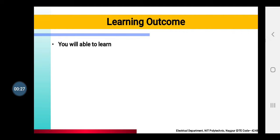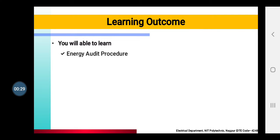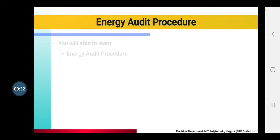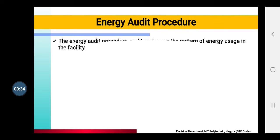Learning Outcomes: you will be able to learn about what are the procedures of Energy Audit. Energy Audit Procedure — it is a procedure where the auditor observes the pattern of energy usage in the facility.